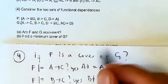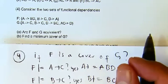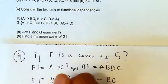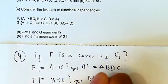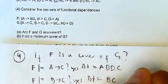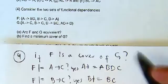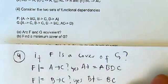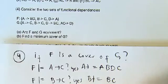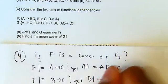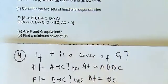Another functional dependency from G is D→BC. We compute D+ using F. Starting with D, from D→A we get A, then from A we get B and D, and from B we get C. So BC is a subset of D+, therefore the answer is yes.